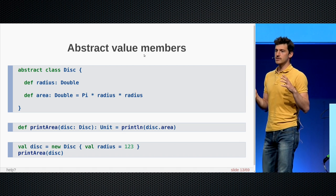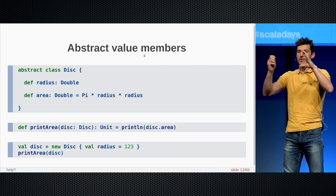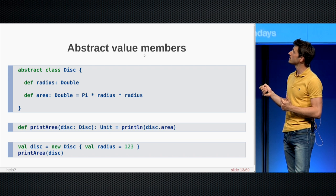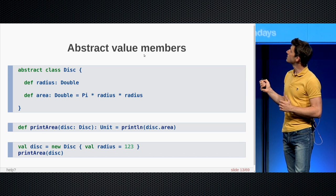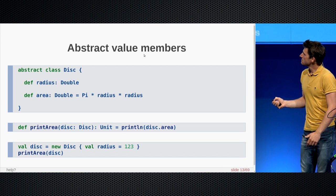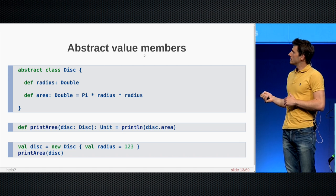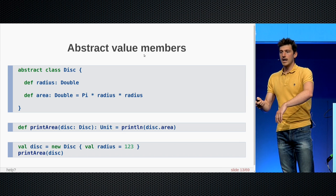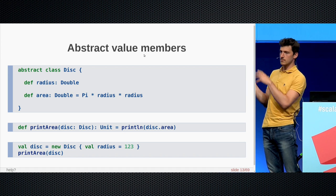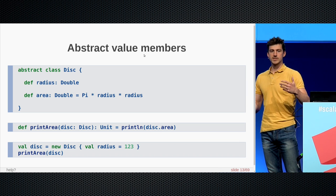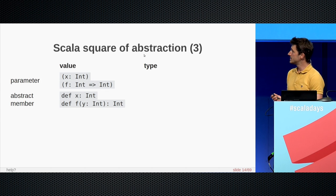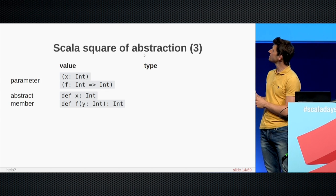The second case consists in trading this constructor parameter for an abstract method. Instead of having a constructor parameter, I have an abstract method radius. The remaining code is exactly the same — I can define the area in terms of this unknown radius. The only difference is a matter of style: in order to fill this unknown value, I have to create a subclass of disk and implement the abstract method in that subclass. This approach is more object-oriented because it relies on inheritance — here I'm creating an anonymous subclass of disk. That's the second cell: abstract methods.